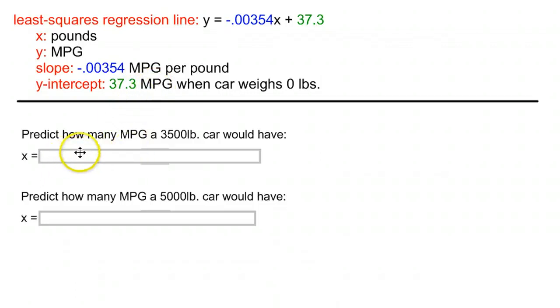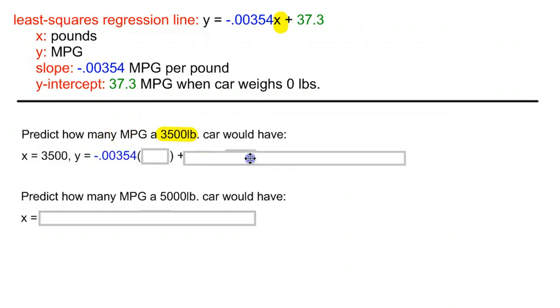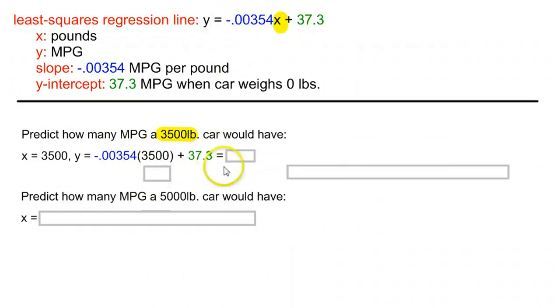Now, to predict how many miles per gallon a 3500 pound car is going to have, we simply take our x value, 3500, and plug it in for x in the equation. So if we write it out, we're going to plug in 3500 for the x value of this equation here.